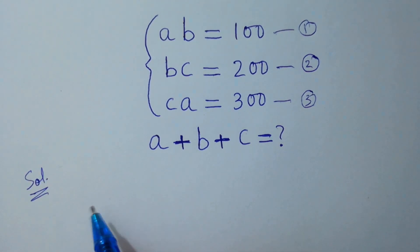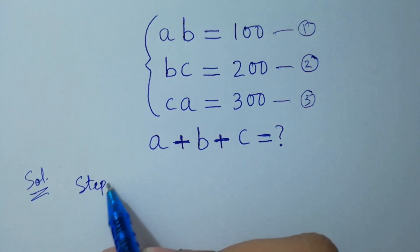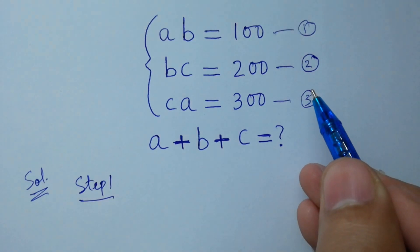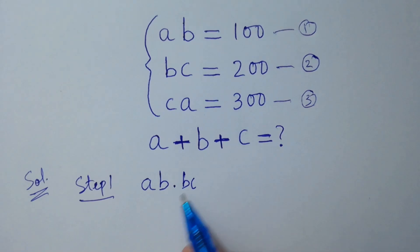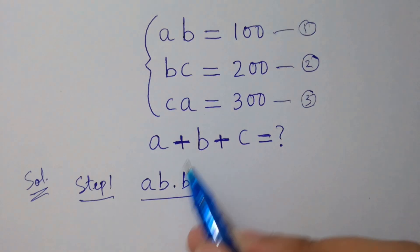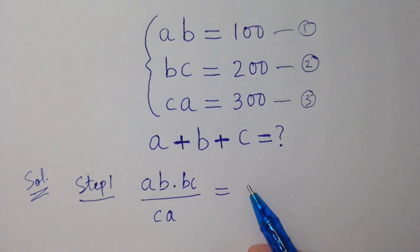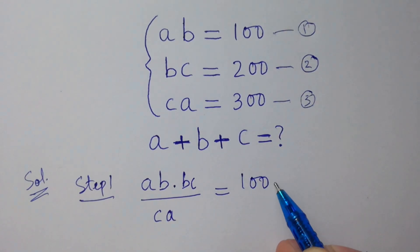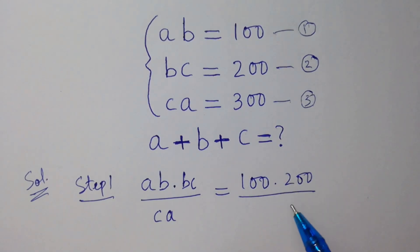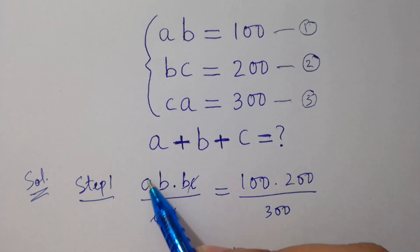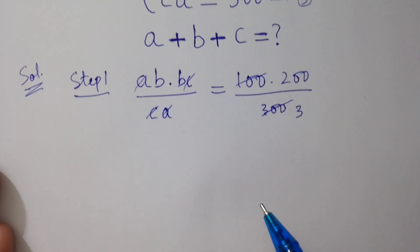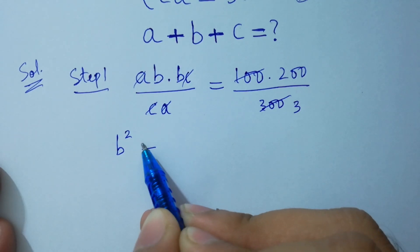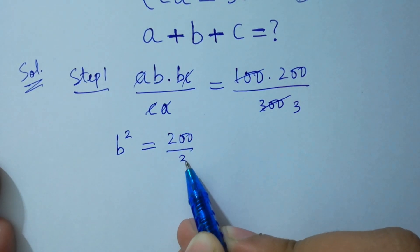Solve it now. The first step is to multiply the first equation by the second equation, then divide by the third equation: (ab × bc) / ca = (100 × 200) / 300. Here c and c will be cancelled, a and a will be cancelled. We get b² = 200/3.